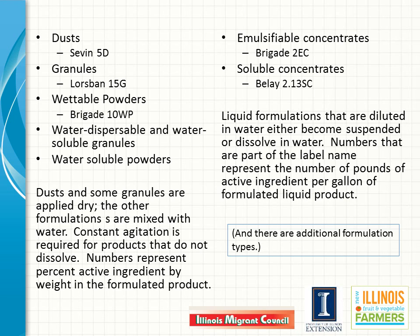7-5D is a 5% dust for application in dry form. Brigade 10WP is a 10% wettable powder that is mixed with water to form a suspension applied through a sprayer. The formulations on the right are sold in liquid form—emulsifiable or soluble concentrates—that are also diluted in water before application. For liquid products, the numbers on the label represent the number of pounds of active ingredient per gallon of formulated liquid product. Brigade 2EC contains two pounds of the active ingredient bifenthrin per gallon of product.